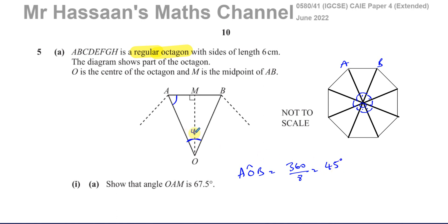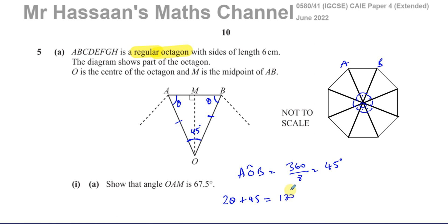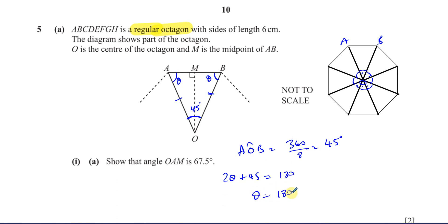So this angle AOB is 45 degrees. Now, we know that OA and OB are both the same length, so this is an isosceles triangle. The angle OAB — angle OAM — let's call it theta. And this angle on the other side is also theta, because this is an isosceles triangle.